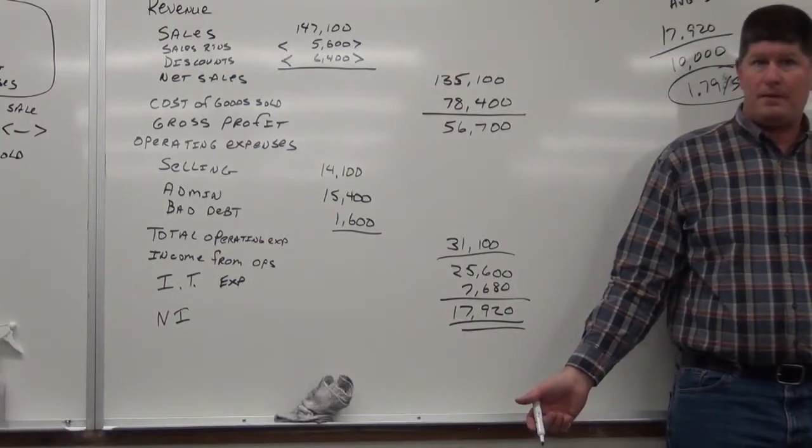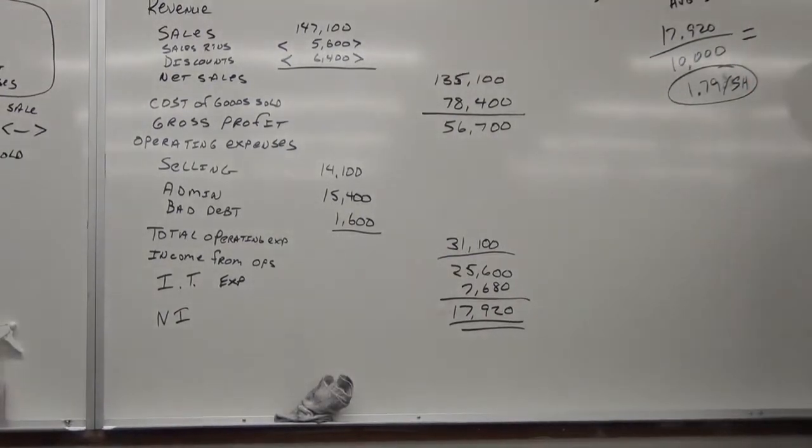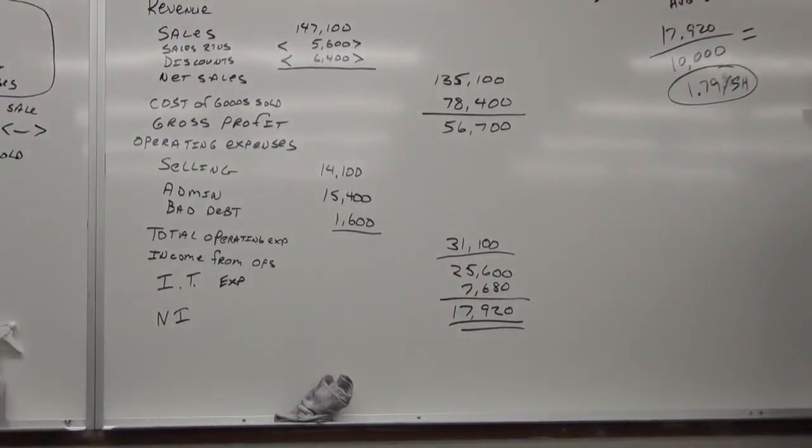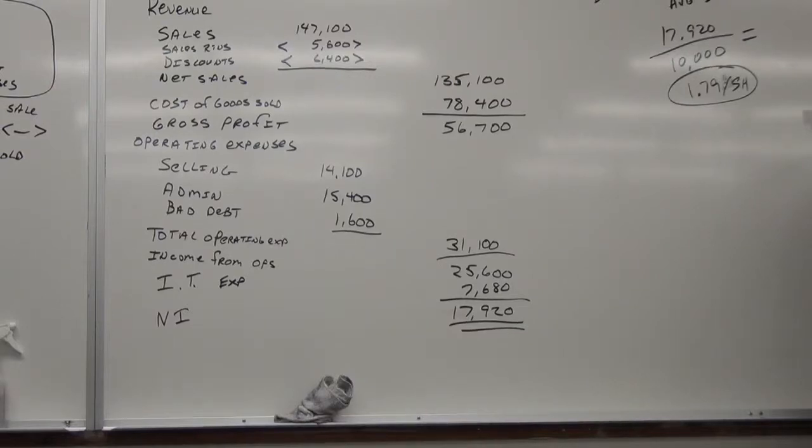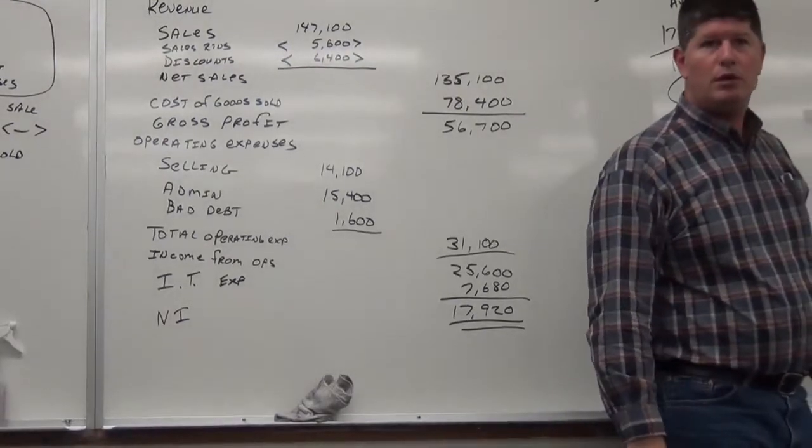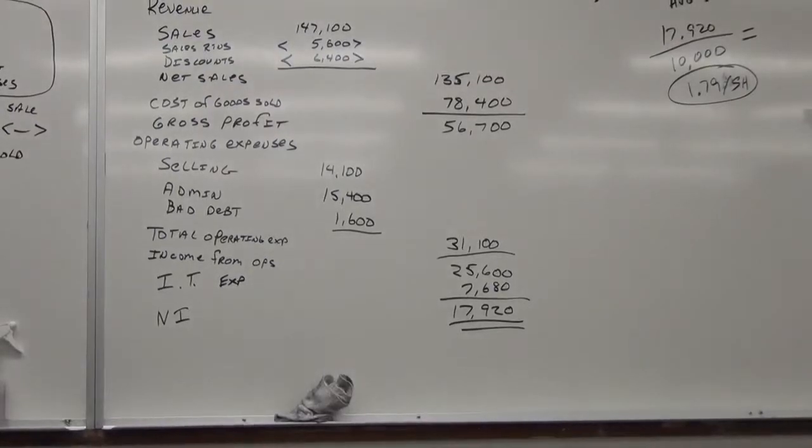Net sales divided by average account receivable. Over average AR. So, what's our net sales? Right here? Yes? Okay. So, $135,000 divided by, do we know what our accounts receivable is? Does it give it in the problem? Because I don't have it in my income statement anywhere, right? Yeah. It does have, yeah, the two, the beginning accounts receivables.